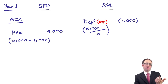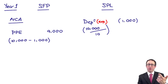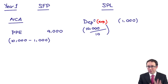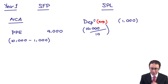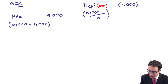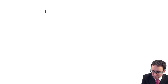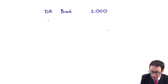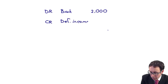Now there are two parts to deal with: the PPE and the government grant. We've done PPE — the government grant is new. We received 2 million, so we debit the bank with 2 million and credit deferred income with 2 million. That's the initial recognition. Deferred income is a current liability.